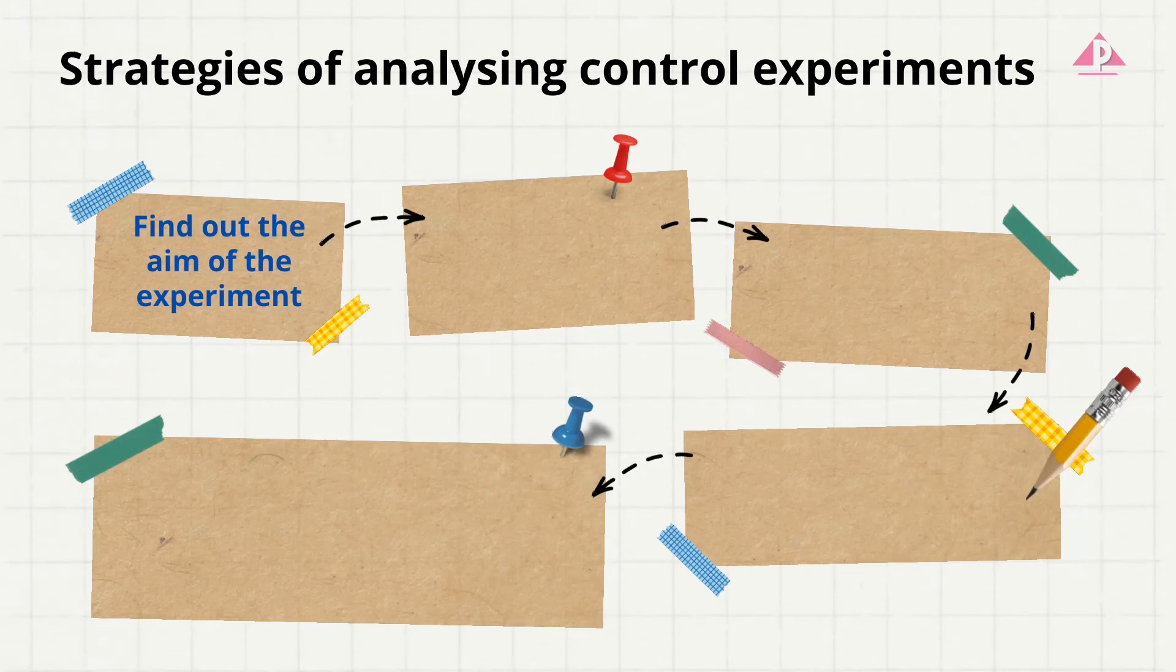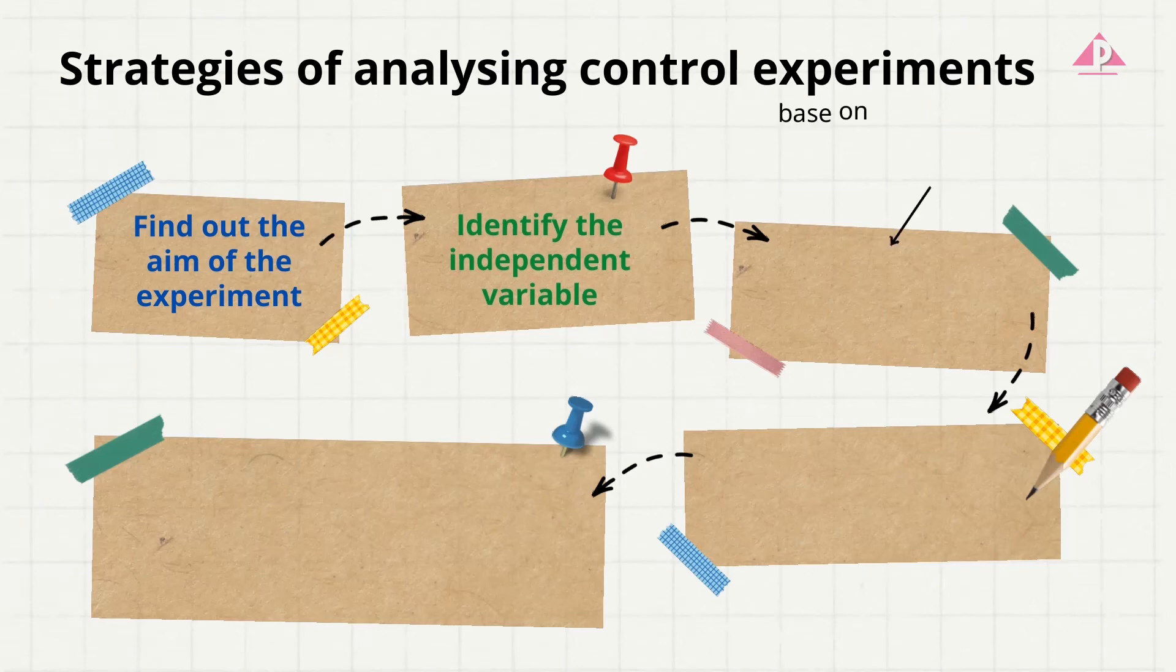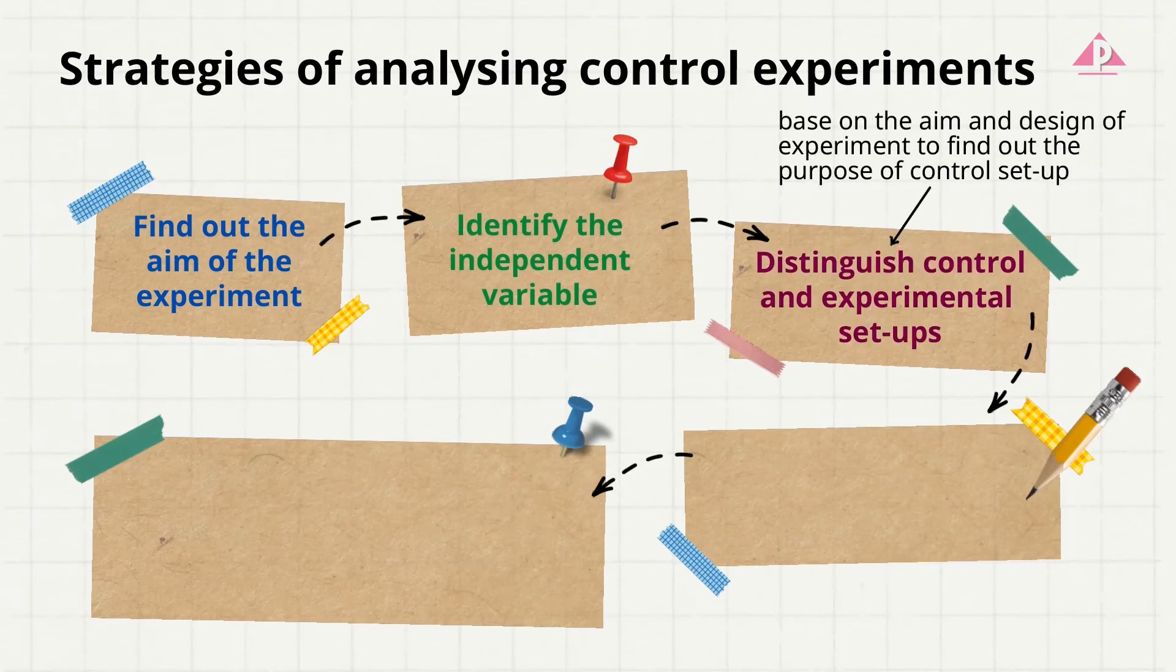Finally, let's sum up what we have learned about analyzing a control experiment. First, we need to find out the aim of the experiment. Then, identify the independent variable of the experiment. After that, distinguish which is a control setup depending on the presence or absence of the independent variable.